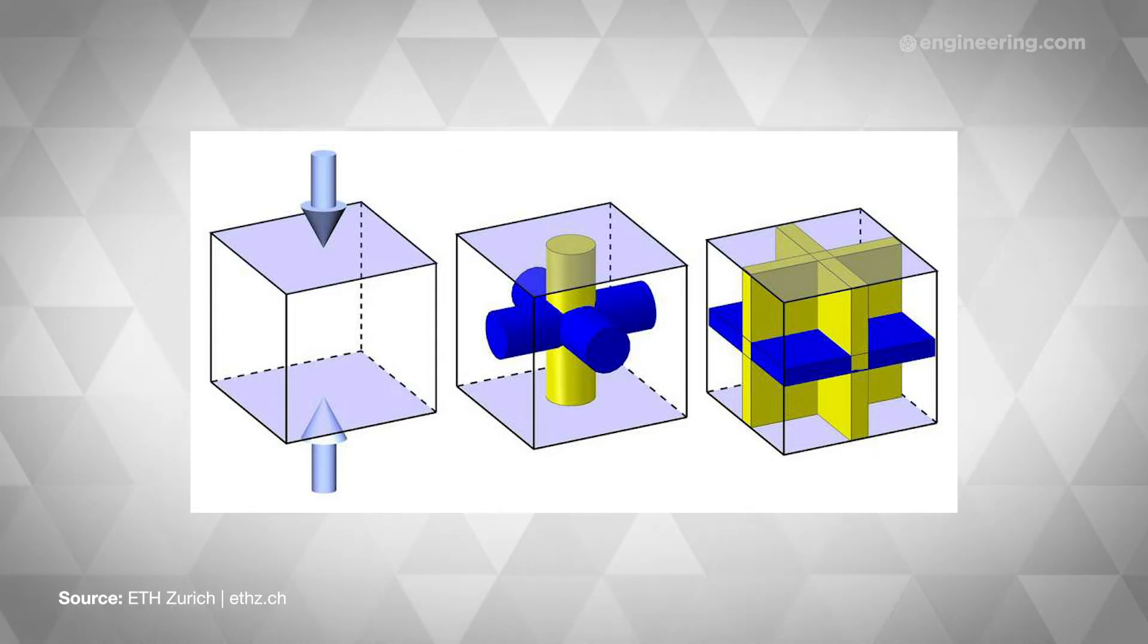Now think about what happens to each of the cubes when a force is applied to one of their faces. In the first cube, only one of the three struts actually carries the force. The other two don't contribute unless force is applied in another direction. In contrast, two of the three struts will always contribute to the second cube's stability, regardless of the direction of force.